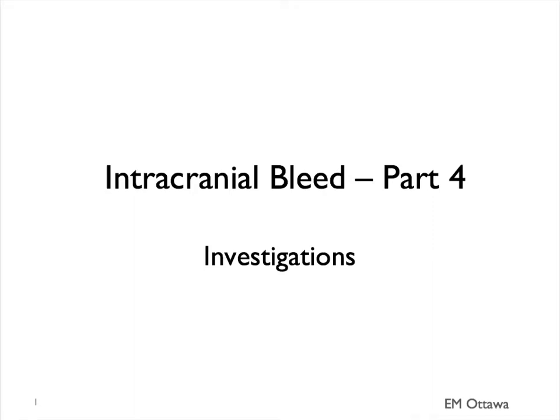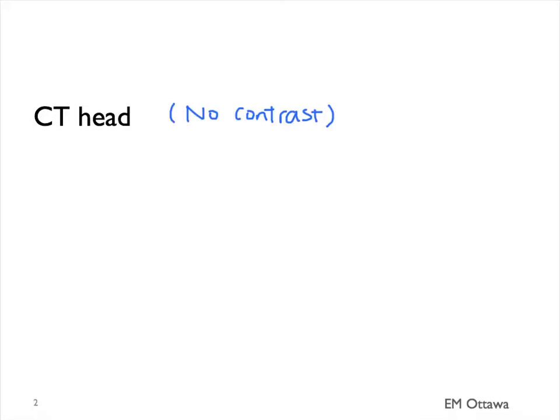Welcome back to intracranial bleed. In this section, we will discuss the investigations. The investigations of intracranial bleed start with a non-contrast CT scan of the head. On a non-contrast CT head, acute bleeding will be white. Let's see what the different bleeds will look like on CT heads.